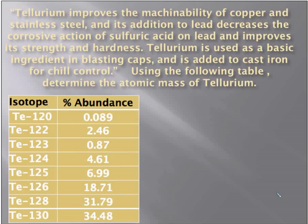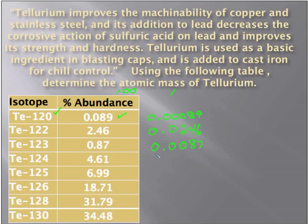This example is for tellurium, a material we don't deal with much, so I thought it would be fun to do. You just have to be a little bit careful with your decimal points. To get the atomic mass, we're going to take the isotope mass times the abundance, but we're going to change that abundance to a fraction by dividing by 100. So instead of 100 percent, we get values like 0.0246, 0.0087, 0.0461 — a fraction abundance where the whole is one.